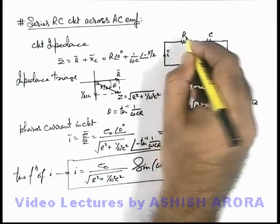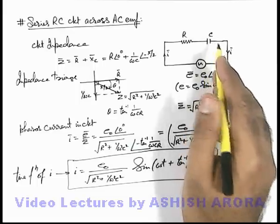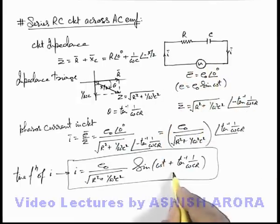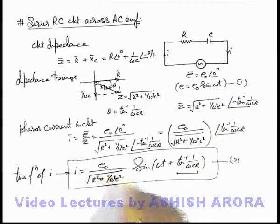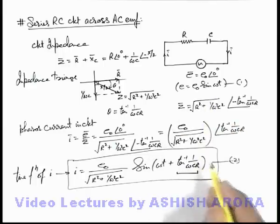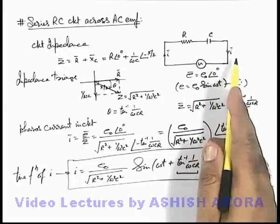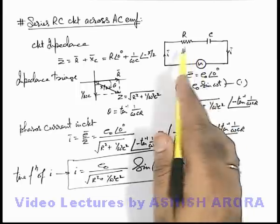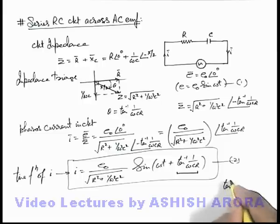For a pure resistance, the current phasor is in the same phase as the EMF. For a pure capacitor, the current phasor leads the EMF by pi by 2. Here, since both are present, the current phasor leads the EMF, but this angle is less than pi by 2 — for the same reasons explained for an inductor and resistance in series. The capacitor tends to keep current 90 degrees ahead, while the resistance tends to keep current in phase with the EMF. Due to the combined effect, the current leads the EMF by an angle between zero and pi by 2.